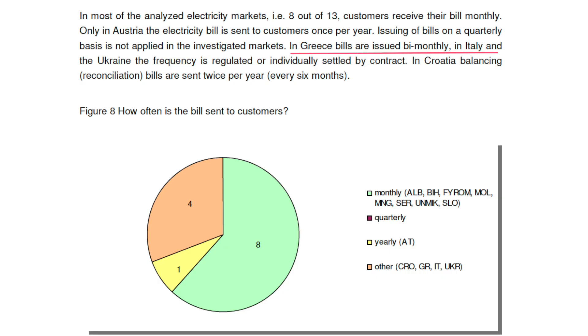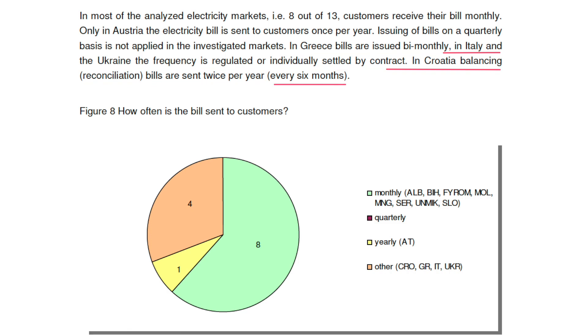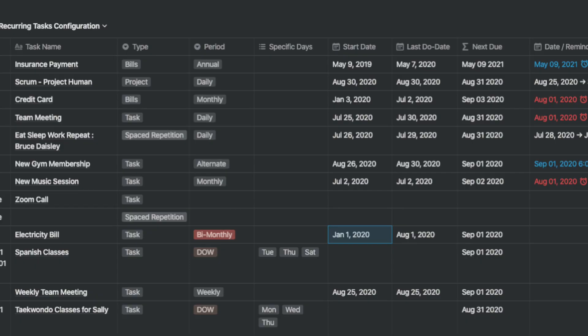There was a second request that came in from a buyer from Europe, where they seem to have a number of bills that they pay on a bi-monthly basis — that's once in two months. So I created this repeat where if a bill is due in January, the next due date is March. Once you've crossed March, the next due becomes June, and it keeps going. As you can see, the next due is now September 1st based on that date.